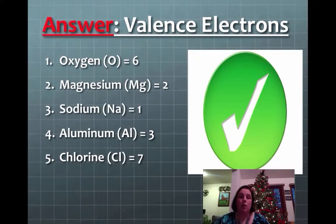Okay, how did you do? Did you find out oxygen has 6, magnesium has 2, sodium has 1, aluminum has 3, and chlorine has 7? Thumbs up. How'd you do?